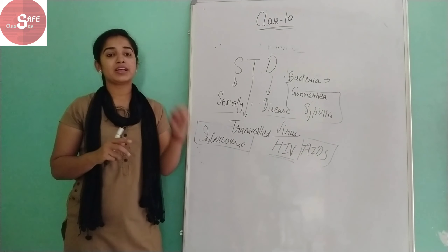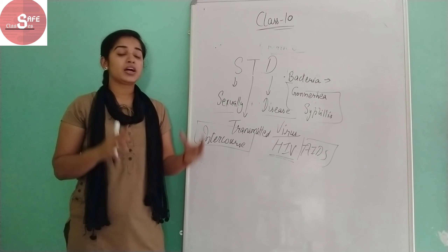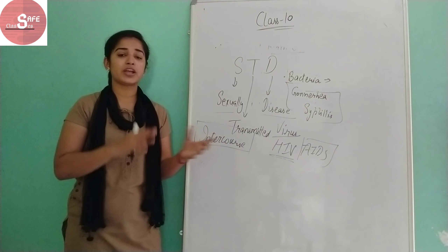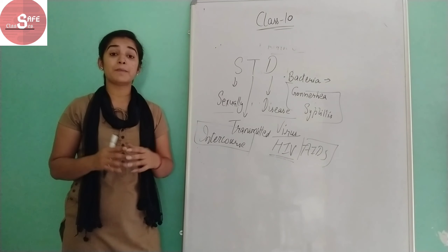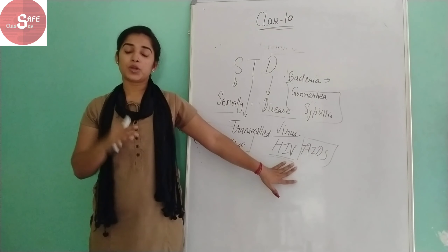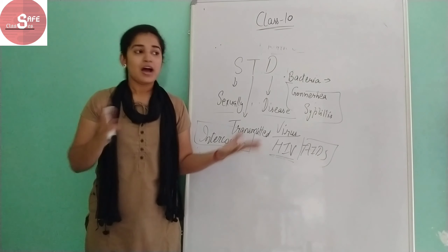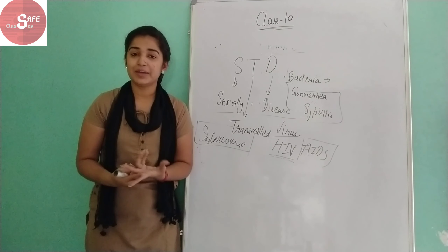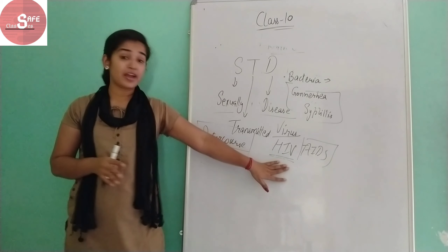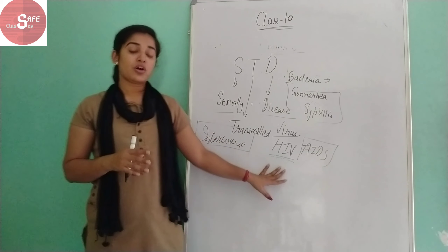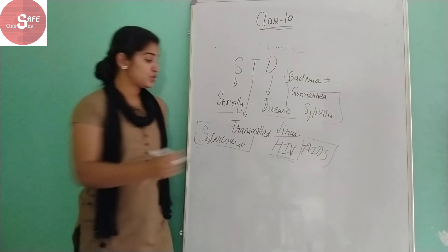In AIDS, the immune system is weak because the HIV virus directly attacks the immune system of the person. As a result, even a small or minor infection can become dangerous. For example, if a person with AIDS contracts a common cold, their immune system is not strong enough to fight it, and what would normally be a simple illness can become life-threatening.